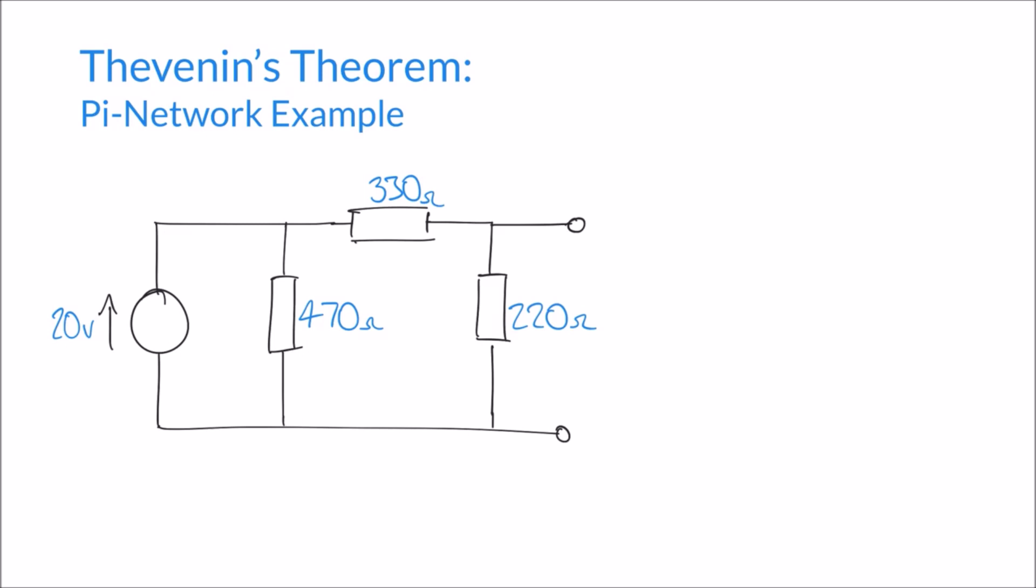You can see here this particular circuit arrangement with these three impedances or resistances arranged in this kind of shape here. It's normally termed as a pi network in the sense that it represents the letter pi, the Greek letter pi, like that.